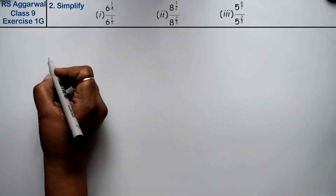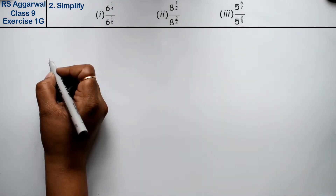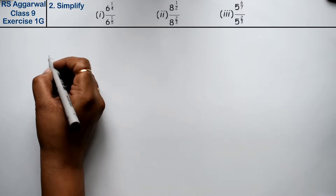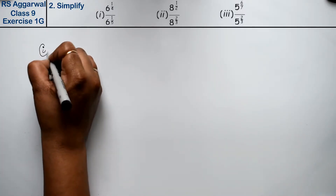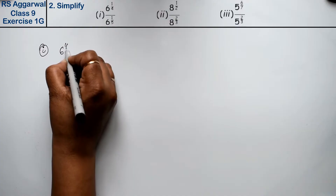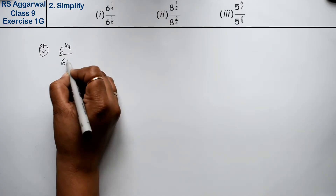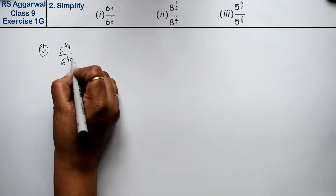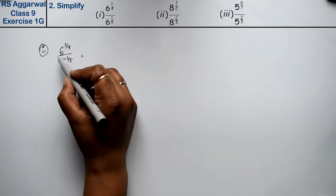Let's do question number 2 of Exercise 1G, that is Number System. Question number 2 is: Simplify. First part is six ki power one upon four divided by six ki power one upon five.